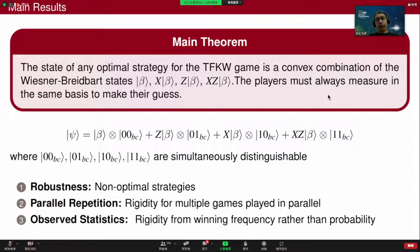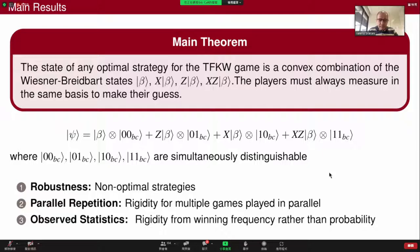Under parallel repetition, the optimal strategies are convex combinations of tensor products of Vicsek bright-red states, and a similar robustness holds. Finally, we show that we can get rigidity still from the number of wins in many rounds played in parallel rather than from the probability of winning many rounds. I think we're out of time, so I'll stop here. If there are any questions, let me know.